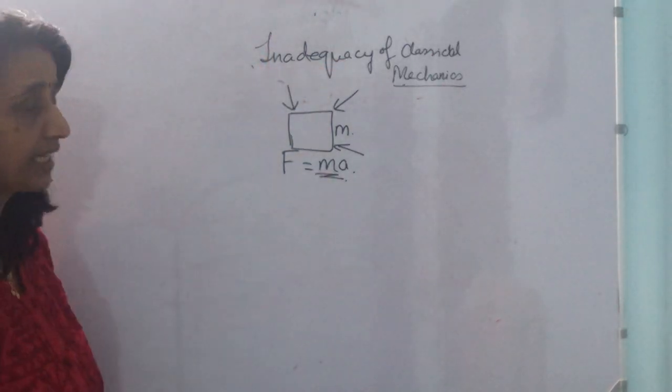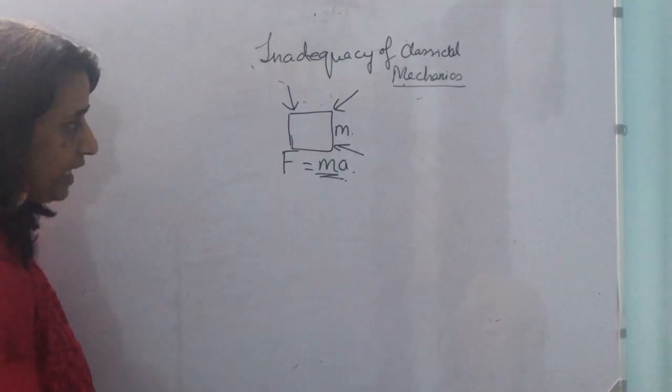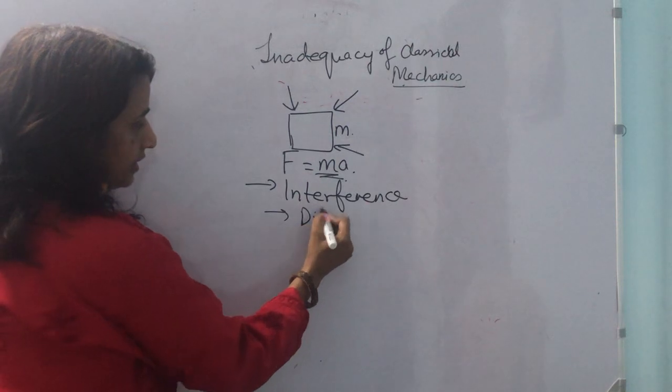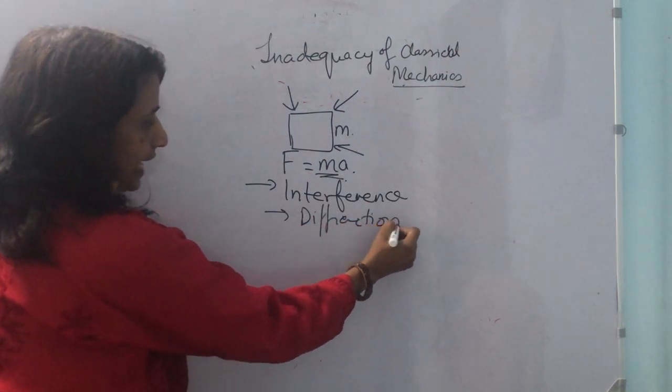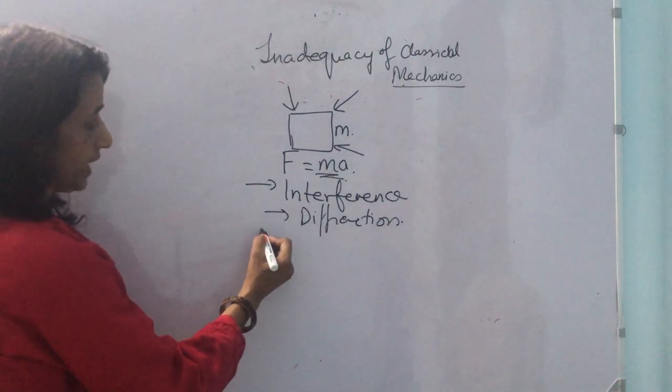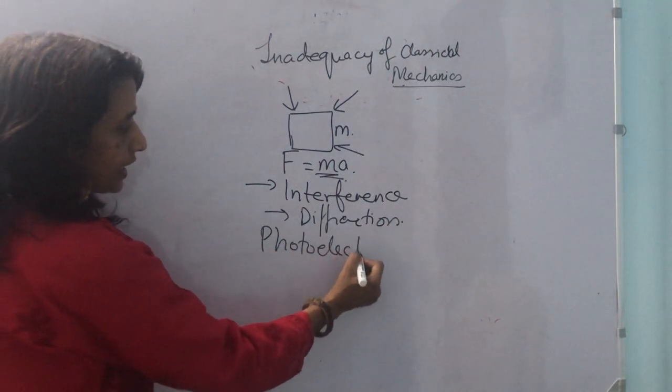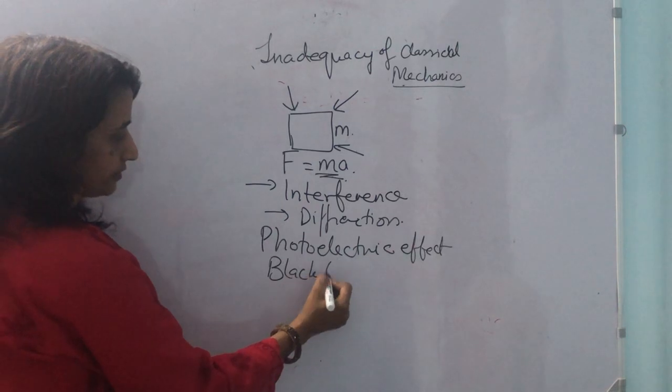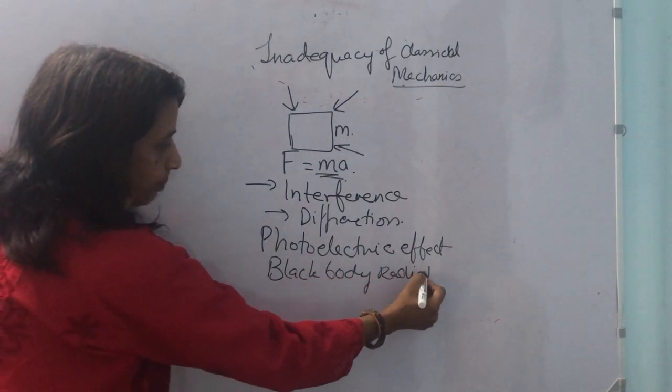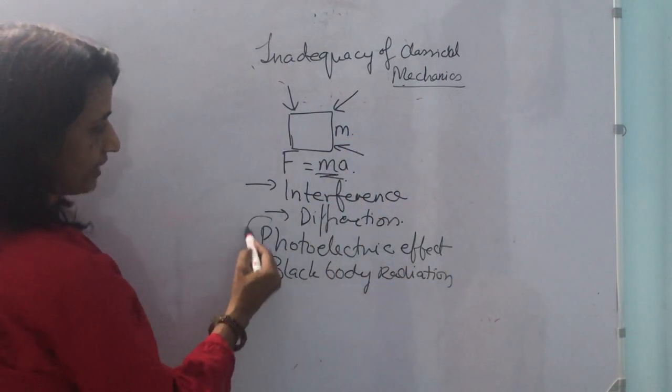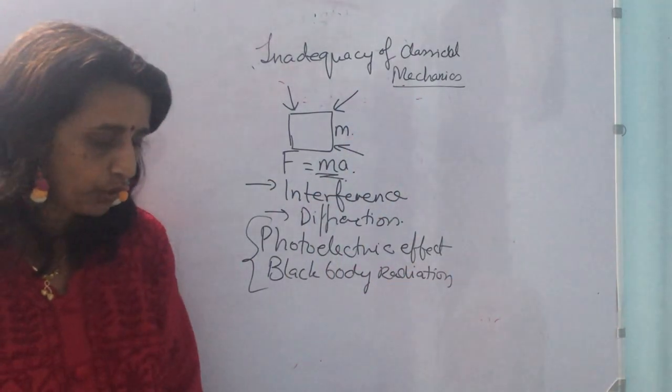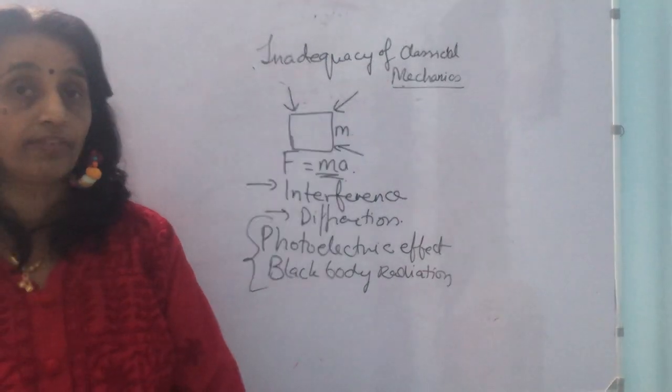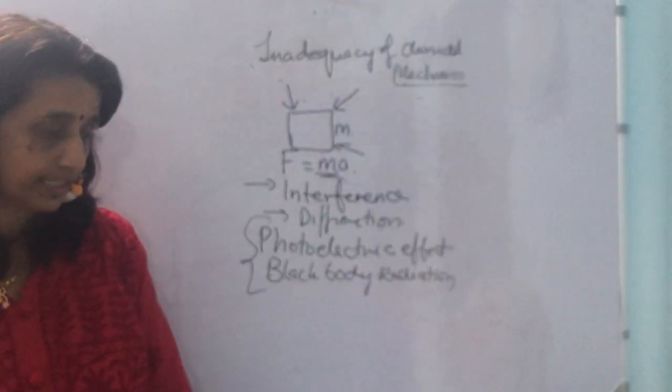Classical mechanics has successfully explained many physics phenomena like interference, diffraction, etc. But classical physics fails to explain phenomena like photoelectric effect, black body radiation, etc. So because of the failure of classical physics in explaining photoelectric effect, black body radiation, stability of atoms and molecules, and their spectra at specific temperatures, quantum mechanics came into being.